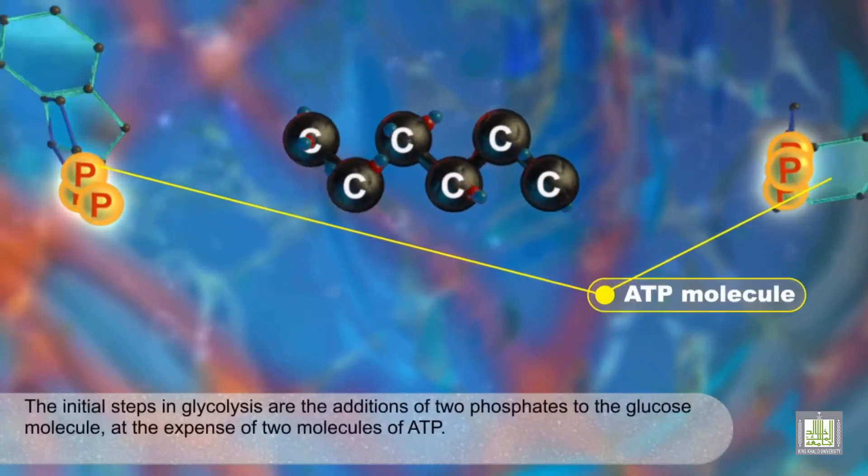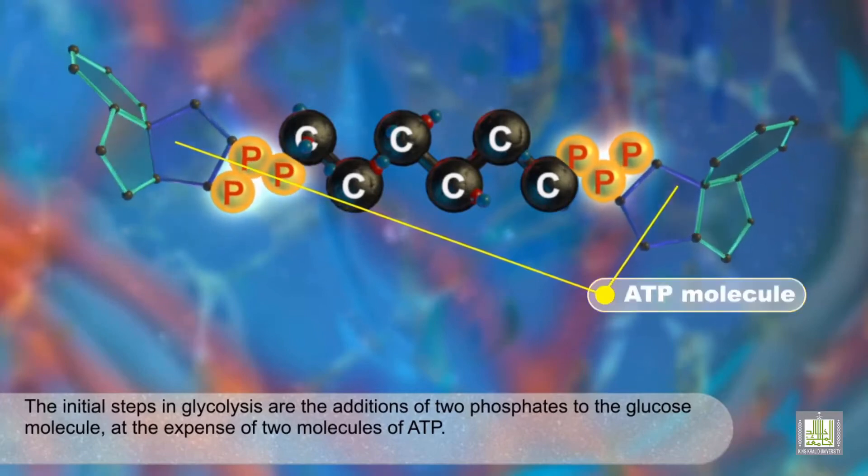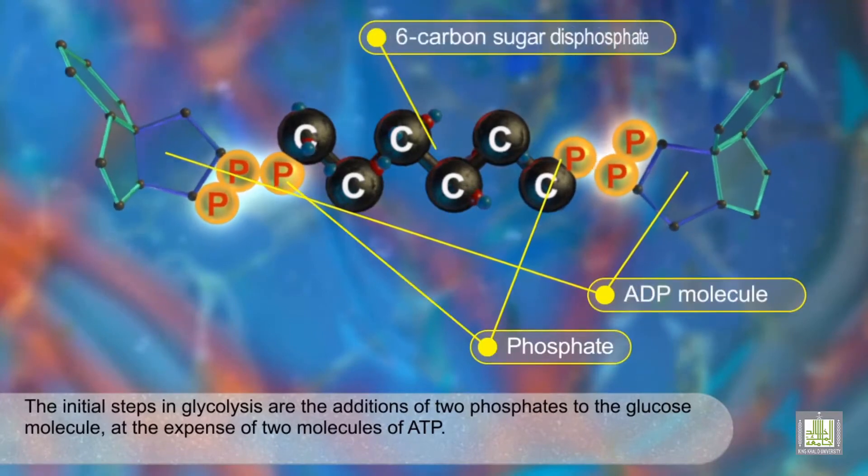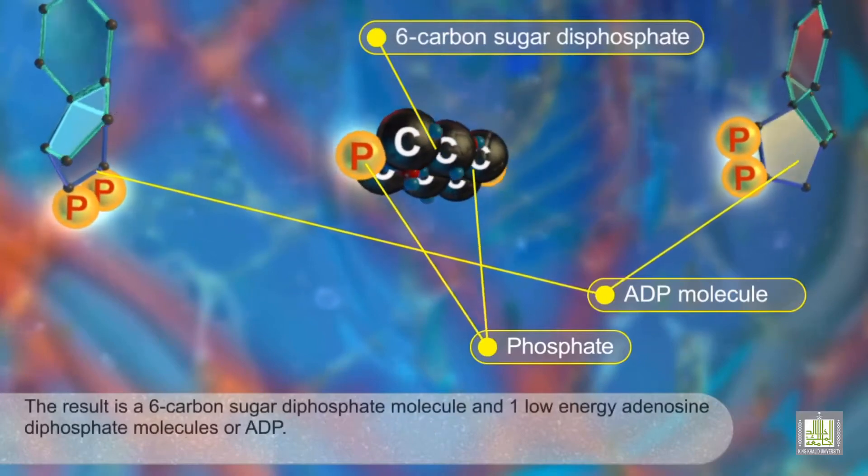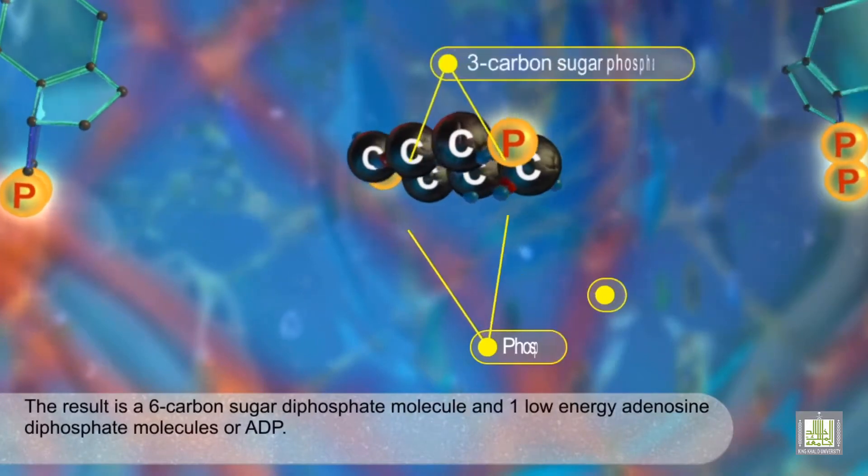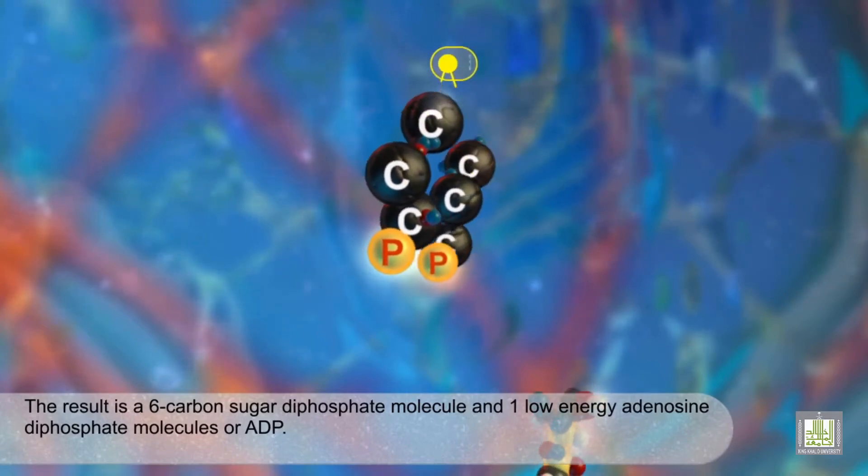The initial steps in glycolysis are the additions of two phosphates to the glucose molecule, at the expense of two molecules of ATP. The result is a six-carbon sugar diphosphate molecule and one low-energy adenosine diphosphate molecules, or ADP.